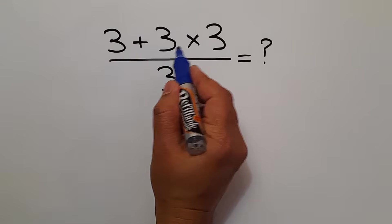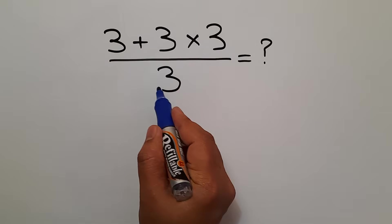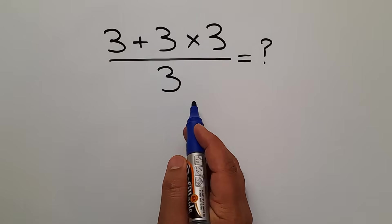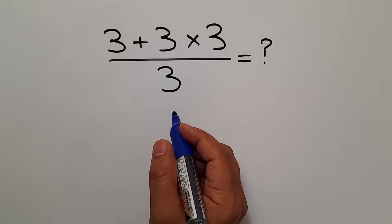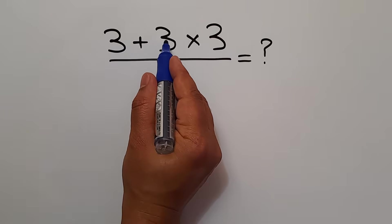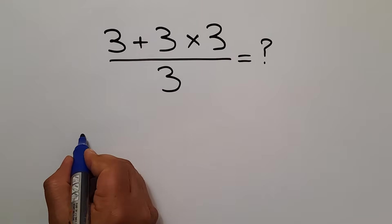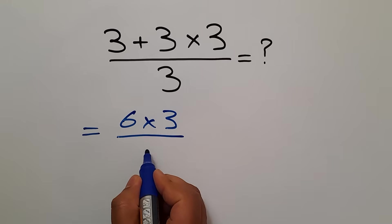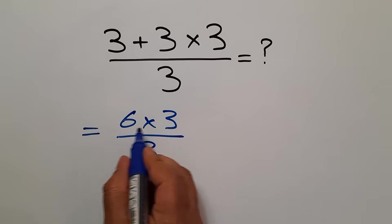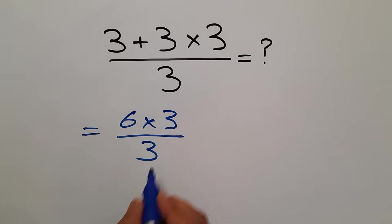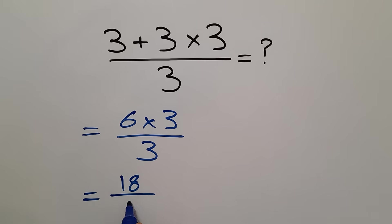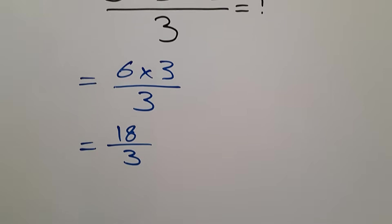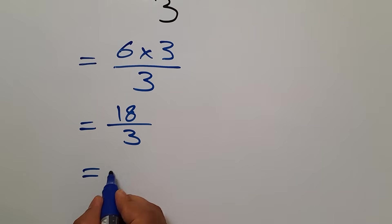3 plus 3 times 3, divided by 3. Are you ready to solve? One might say 3 plus 3 gives us 6, then 6 times 3 equals 18, and 18 divided by 3 equals 6 — but this answer is not correct.